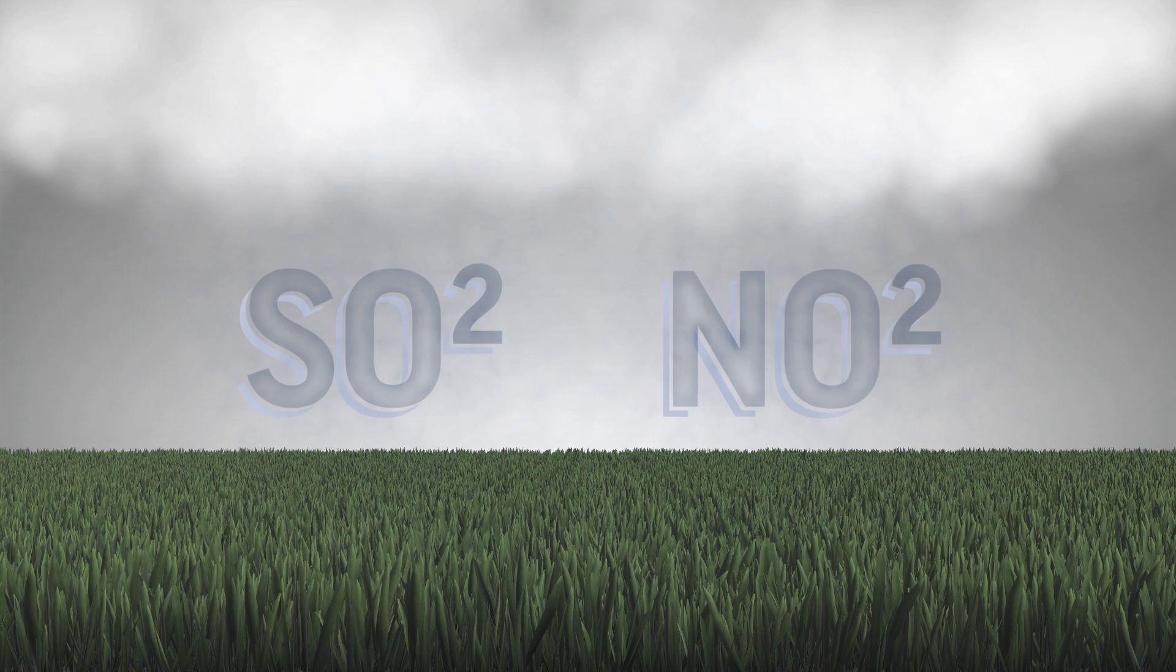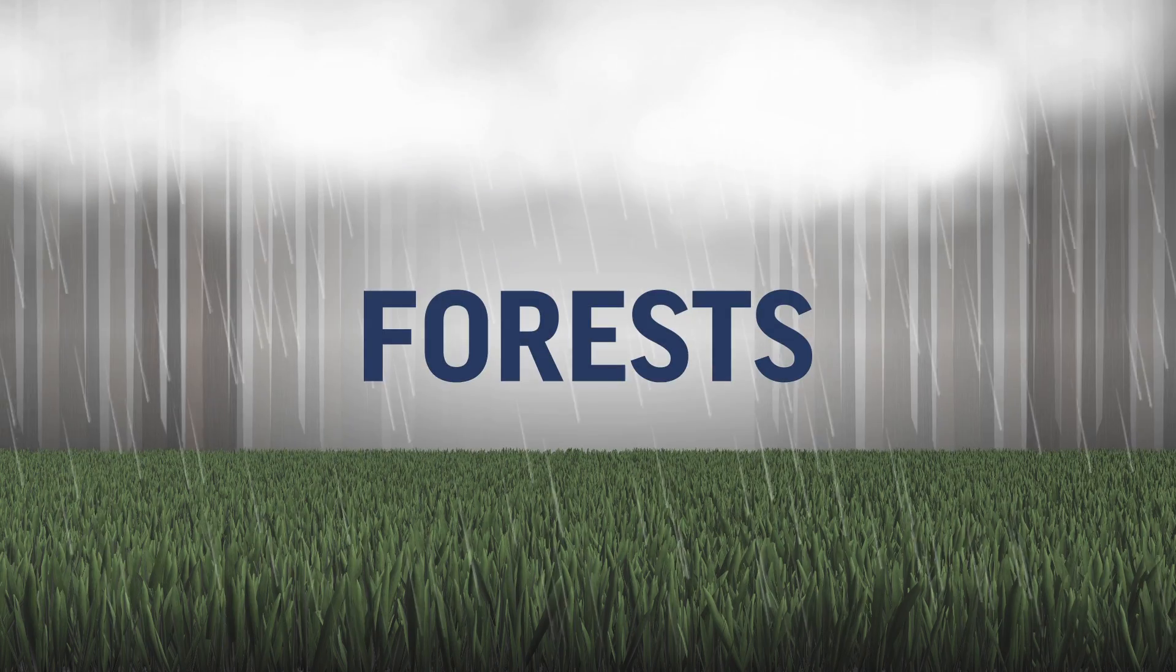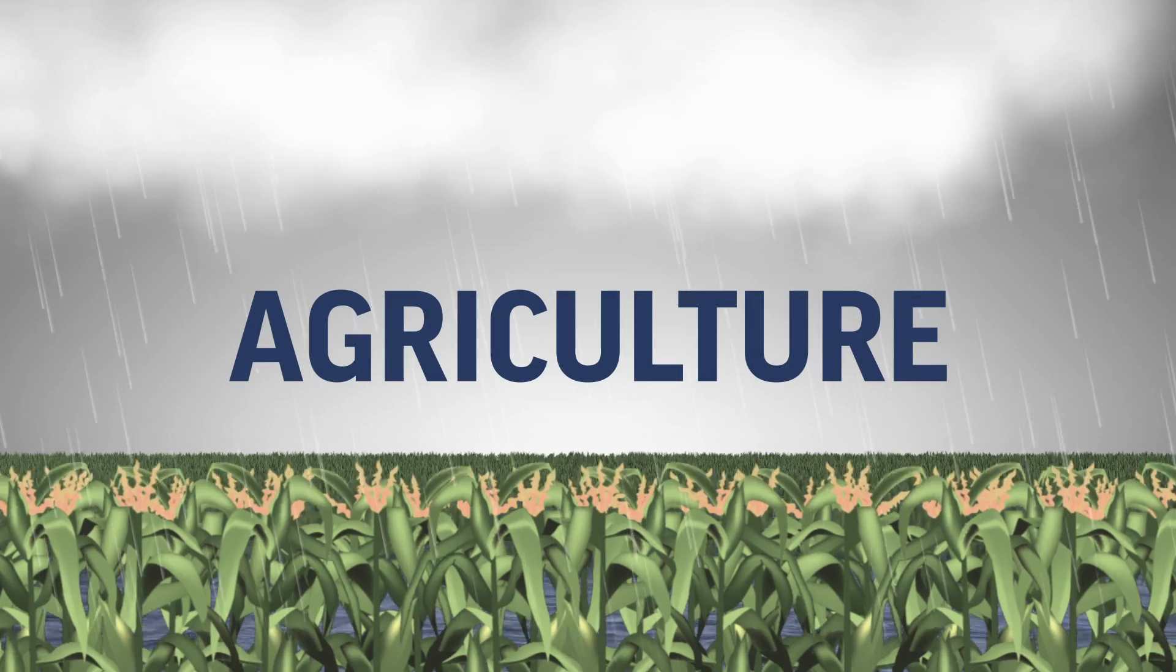Sulfur dioxide also can combine with nitrogen dioxide pollution to form acid rain, which can harm forests, waterways, and agriculture.